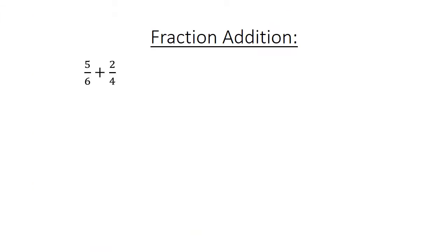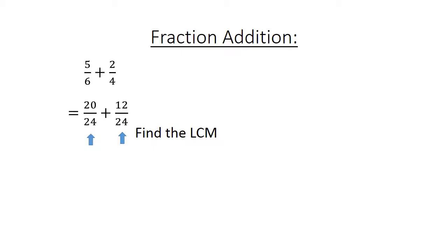Fraction addition. Five over six plus two over four equals. Find the lowest common multiple. Twenty over twenty-four plus twelve over twenty-four equals thirty-two over twenty-four, which equals one and one over three.